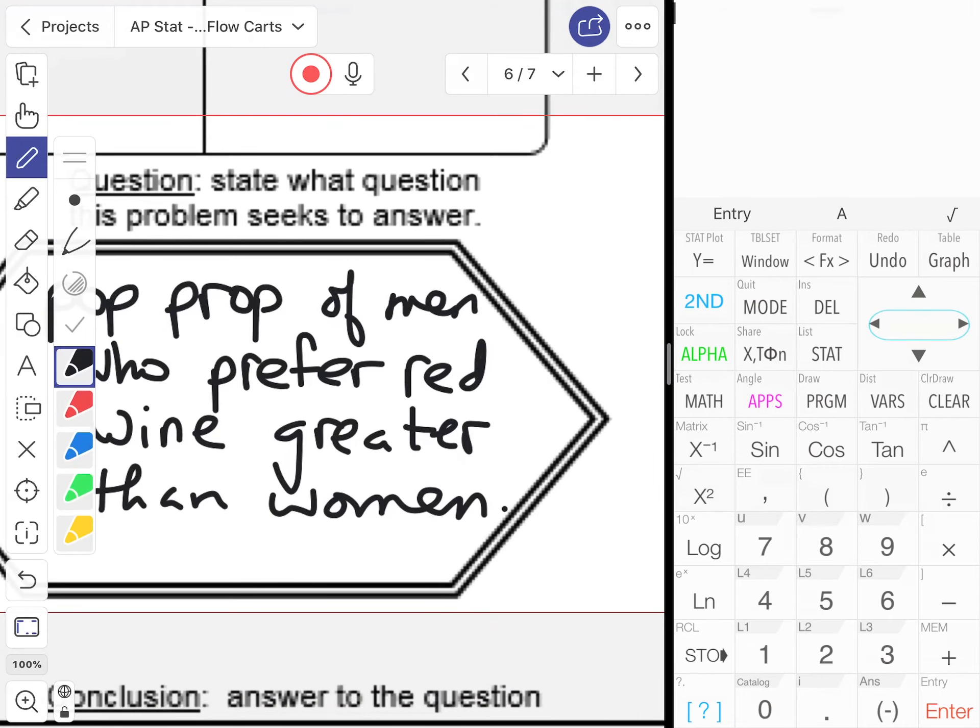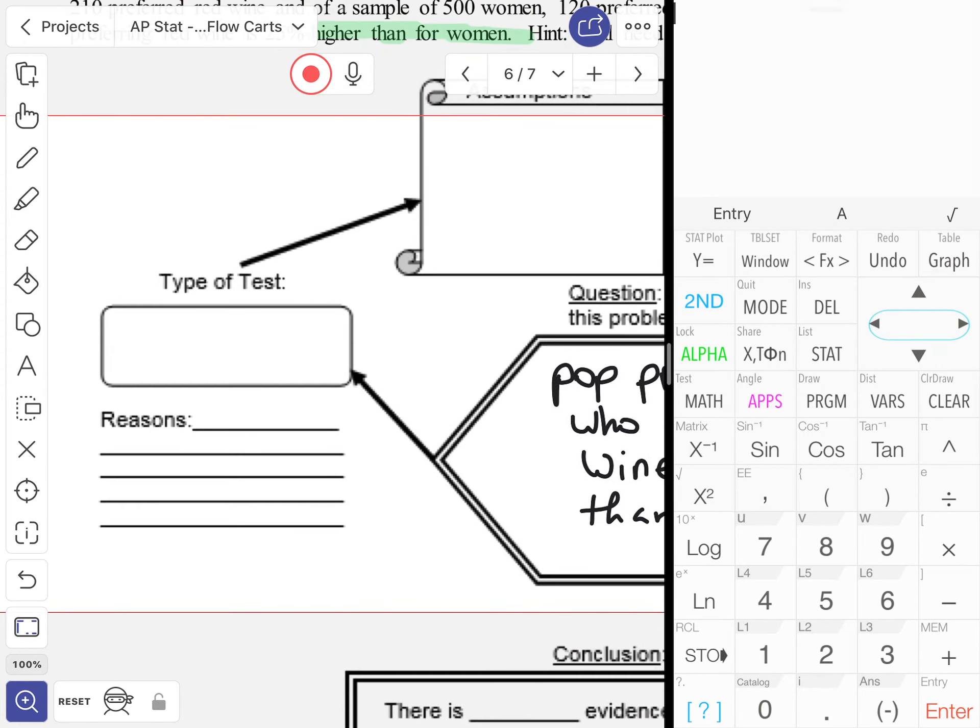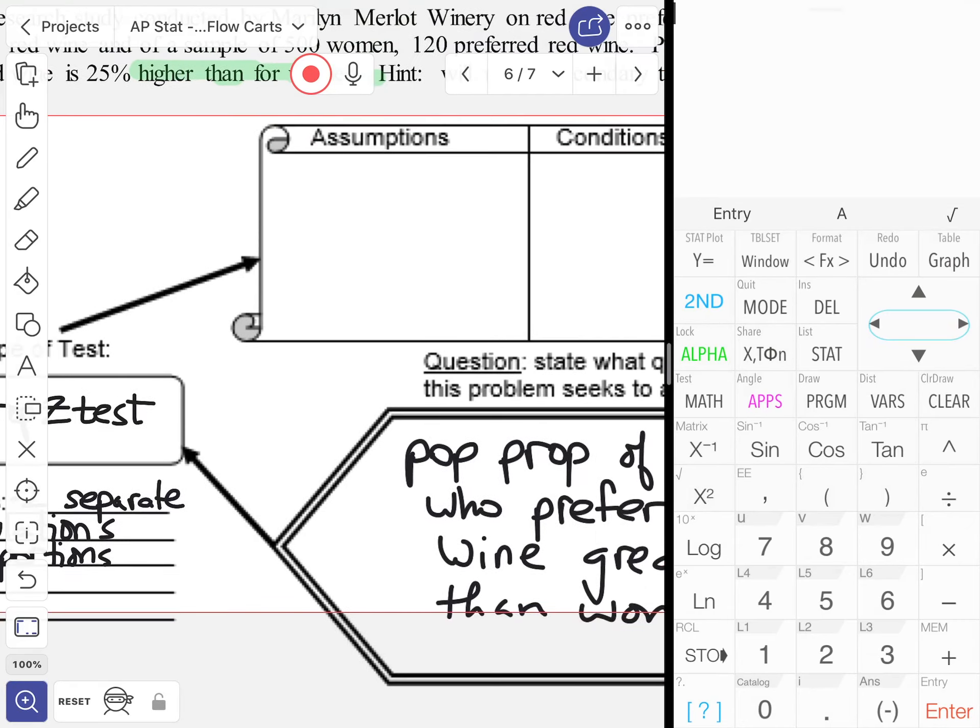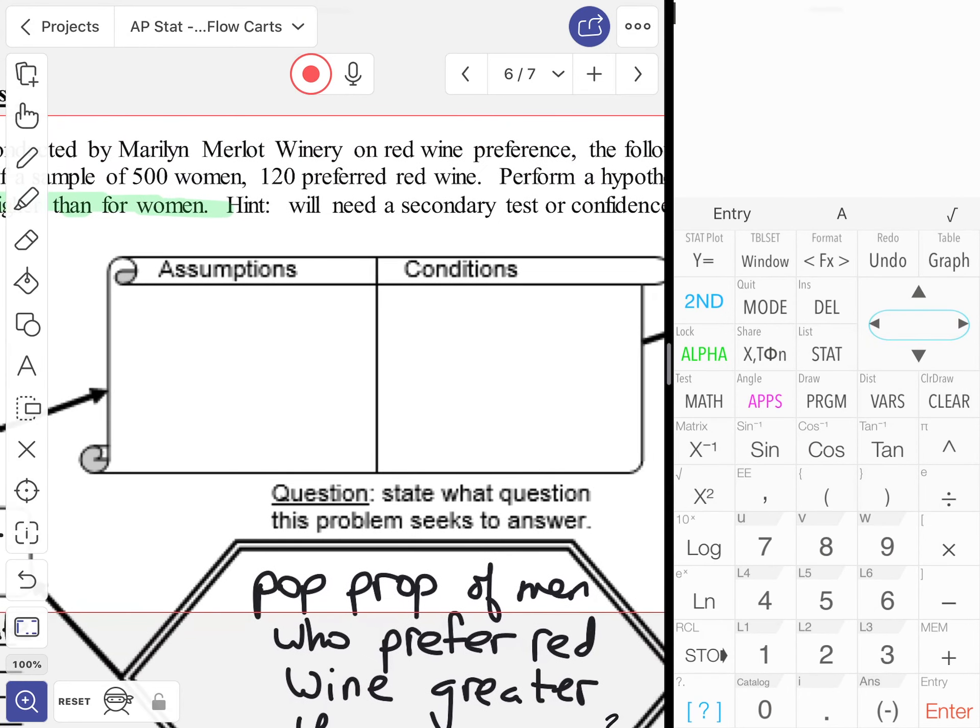Type of test: because we have two separate populations that are not necessarily distributed the same way, and we're concerned with a proportion, this is going to be a two prop z-test. The assumptions and conditions are essentially everything we had for a one prop z-test, along with the fact that there are two populations.